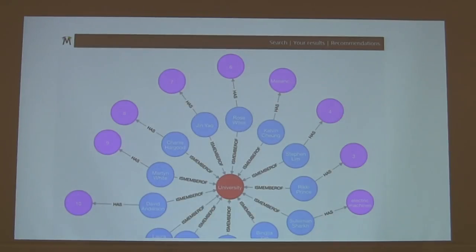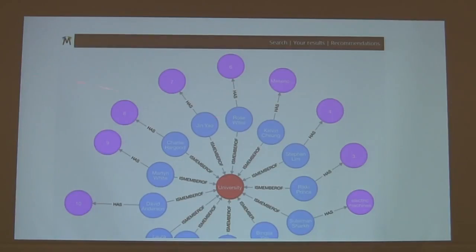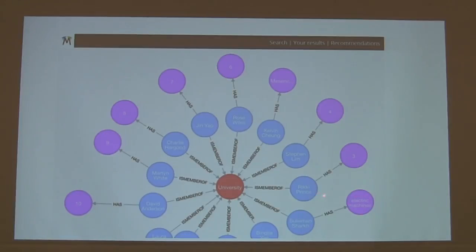My part of the job was working with the database, trying to get it all looped together and getting all this data from the API. As you can see, the University of Southampton didn't have too many people on ORCID, so we used it as a test case. All of these people are at the University of Southampton, and we've got a relationship called 'is member of' — the blue ring shows people being a member of the university. On the outside ring, we have things like their keywords from their profile, which is what joins everybody together.